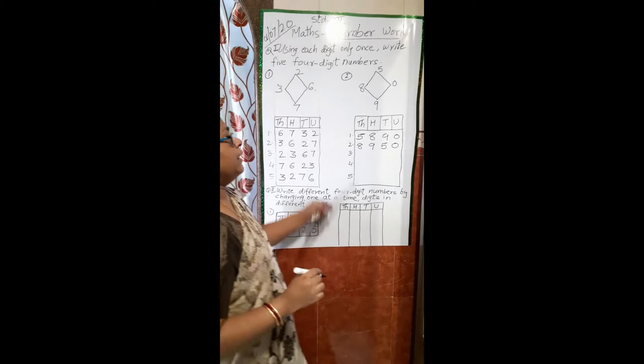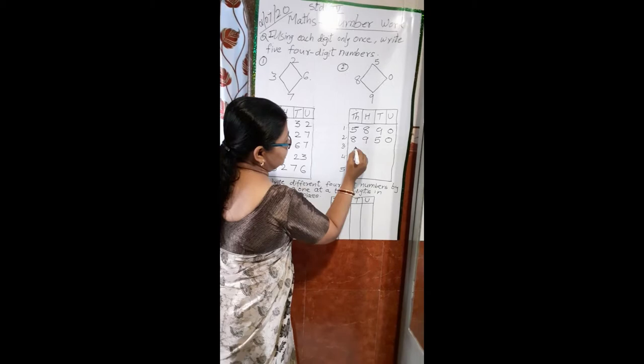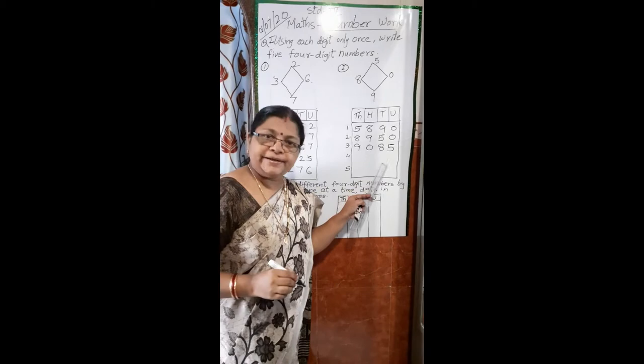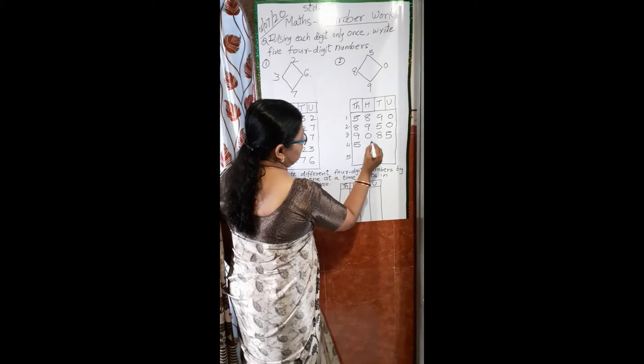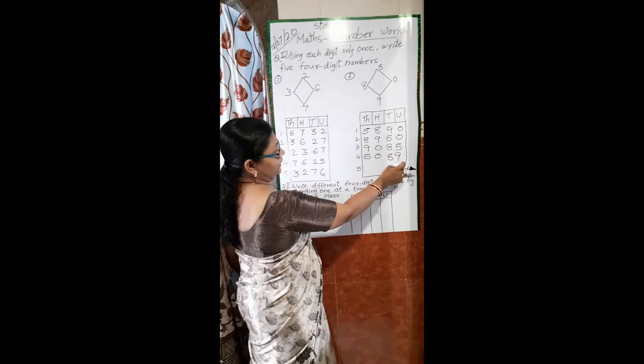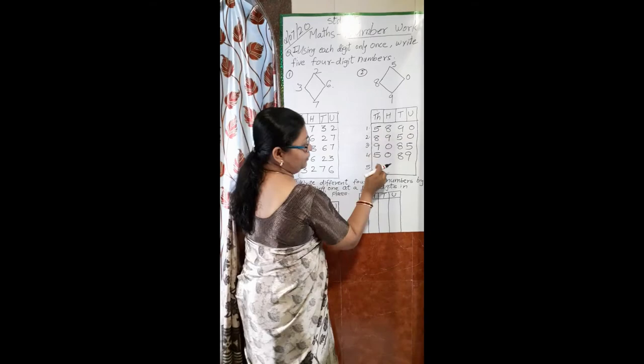Now let me take 8 in the thousands place, 9 in the hundreds place, 5 in the tens place, and 0 in the units place — the number will be 8950. Then 9 in the thousands place, 0 in the hundreds place, 8 in the tens place, and 5 in the units place — the number will be 9085. Next, 5 in the thousands place, 0 in the hundreds place, 8 in the tens place, and 9 in the units place — the number will be 5089.